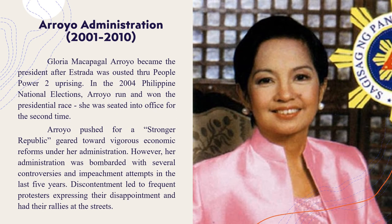Arroyo Administration, 2001 to 2010. Gloria Macapagal-Arroyo became president after Estrada was ousted through People Power II uprising. In the 2004 Philippine national elections, Arroyo ran and won the presidential race, being seated into office for the second time. Arroyo pushed for a stronger republic geared towards vigorous economic reforms under her administration. However, her administration was bombarded with several controversies and impeachment attempts in the last five years. This discontent led to frequent protesters expressing their disappointment in street rallies. She had this vision which she called Sugpuin ang Kahirapan. Her nine-year administration was marred with issues like cheating in the presidential election, poverty, the Expanded Value Added Tax Law, the Fertilizer Scam, Wiretapping, and the ZTE Scandal.